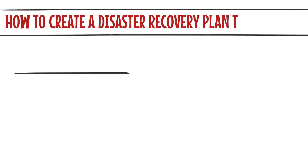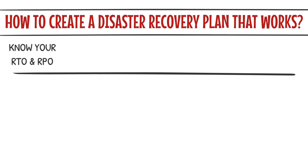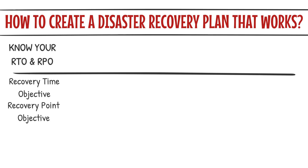So how do you create a disaster recovery plan that actually works? Let's break it down into four actionable steps. Step one: know your RTO and RPO. This is foundational. Your Recovery Time Objective (RTO) is how quickly you need to get back online — is it one hour, four hours, a full day? Your Recovery Point Objective (RPO) is how much data you can afford to lose — a week's worth, a day, 10 minutes? These aren't just technical terms; they're business-critical decisions. Start with your business's priorities — which systems are mission-critical? Think customer portals, financial transactions, or real-time data streams.